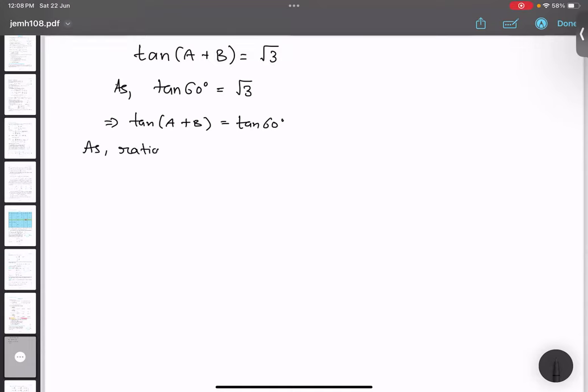As ratios are same both sides I'm getting tan theta, so I can say that ratios are same. Therefore angles must be equal. The word must be is important, so when we are saying these two sides are equal, this side is equal to this side.